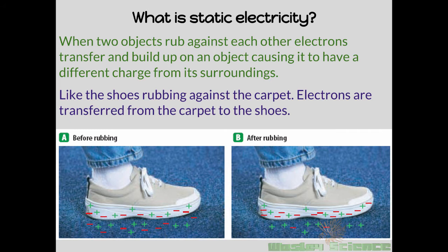So we were talking about rubbing a balloon in your hair — let's go ahead and talk about static electricity. When two objects rub against each other, electrons transfer and build up on an object, causing it to have a different charge from its surroundings. In this diagram, the green plus signs represent protons and the red negative signs represent electrons. On the shoe you can count seven protons and seven electrons — it's neutral.